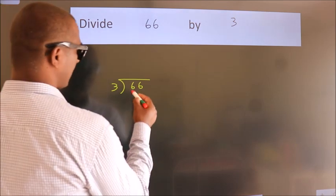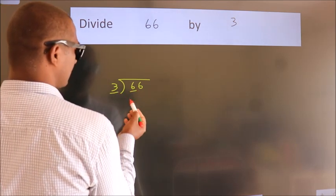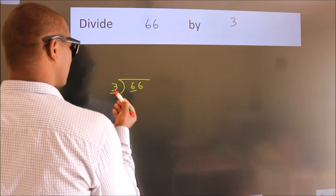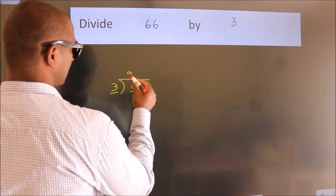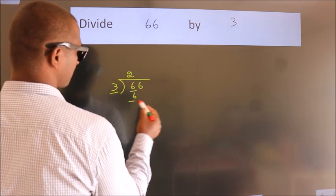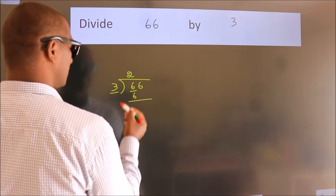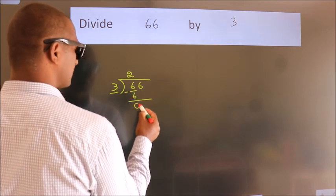Here we have 6, and here 3. When do we get 6 in the 3 table? 3 times 2 is 6. Now we should subtract. We get 0.